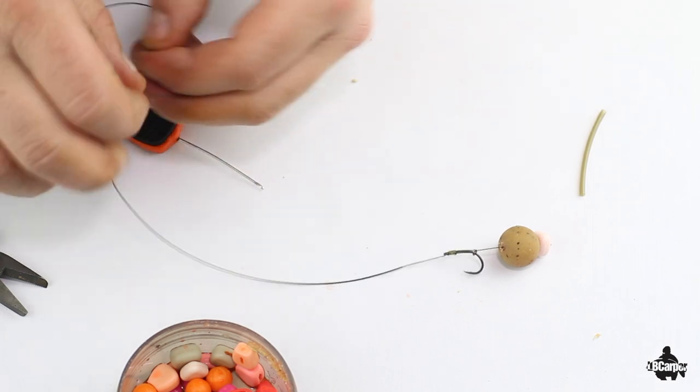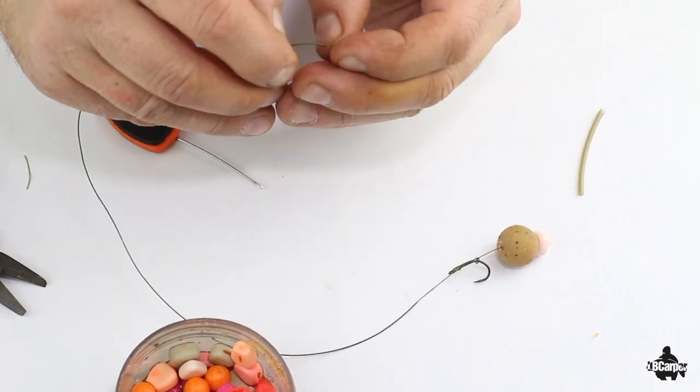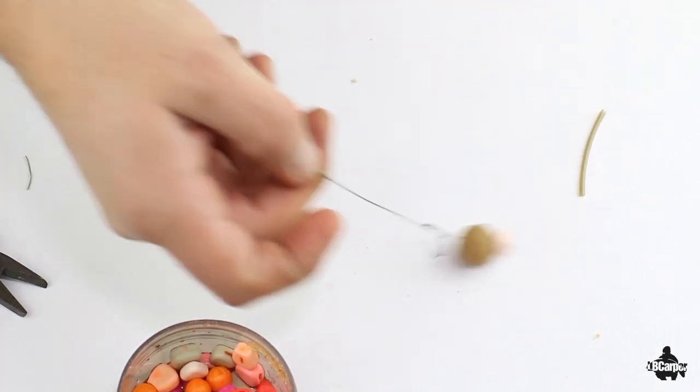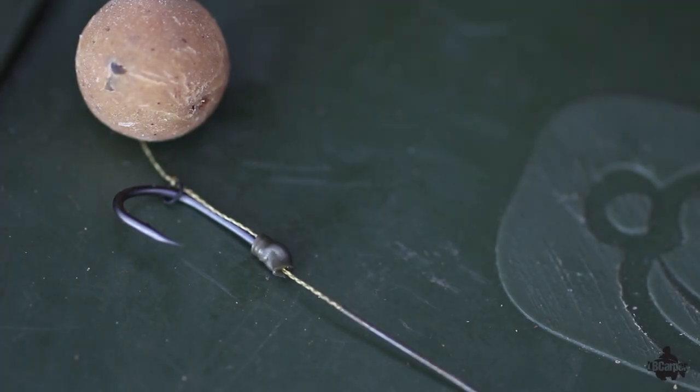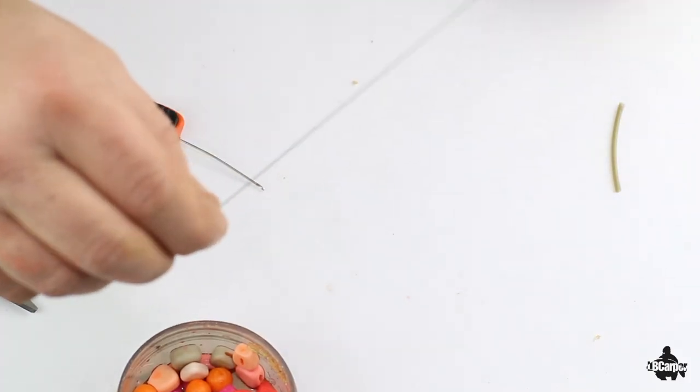Shrink tube. Stick him down onto there. And this will protect the end of the loop.